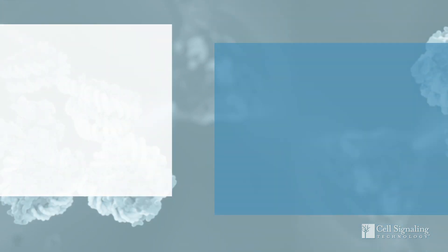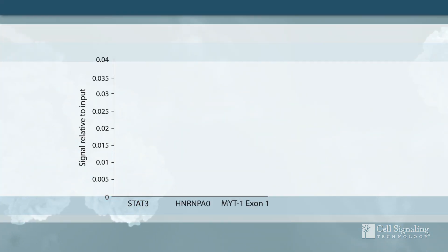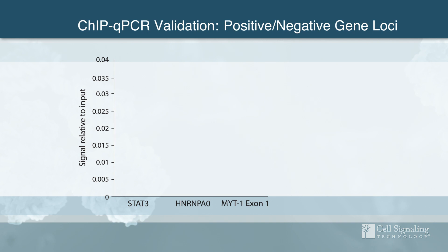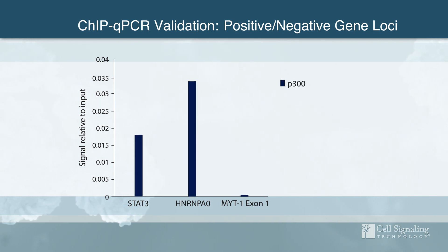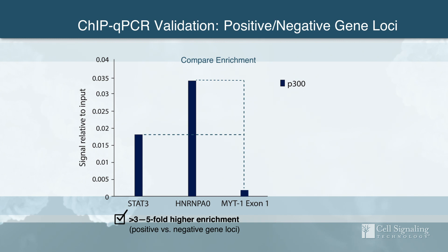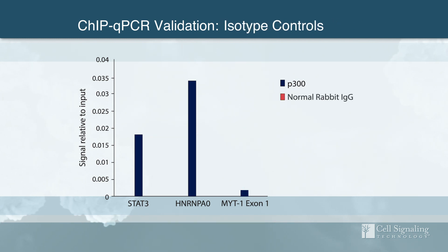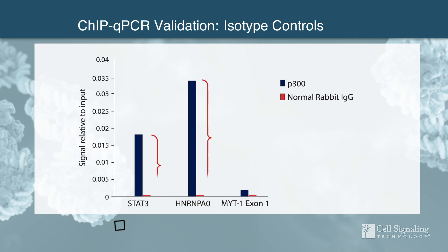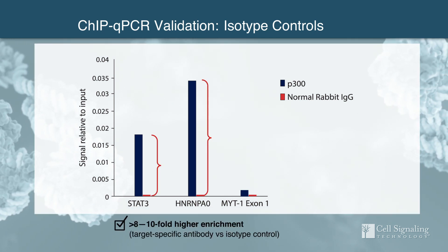Starting with ChIP-qPCR validation, antibody specificity is determined by analyzing at least two known positive and one known negative target loci to measure fold enrichment, which must exceed a pre-specified threshold to be recommended for ChIP. Antibody sensitivity is determined by comparing target enrichment of the antibody to a negative isotype control to test if it meets a predetermined minimum threshold for fold enrichment.